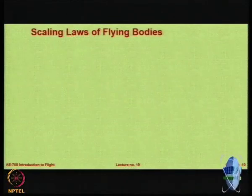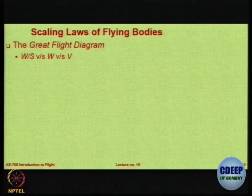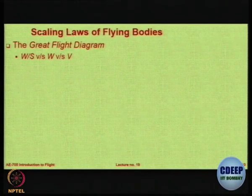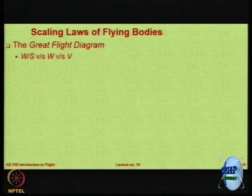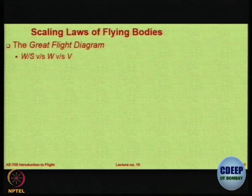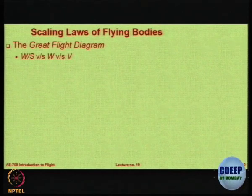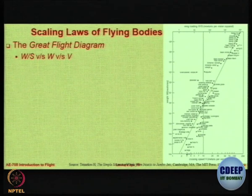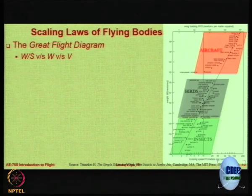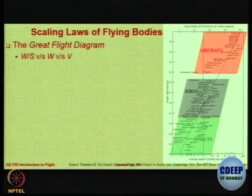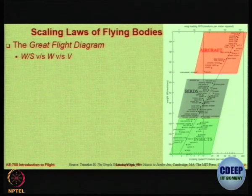Some people have done a lot of research on the scaling of birds. There is a gentleman who has given us a great flight diagram — one diagram applicable to all aircraft and natural flyers, starting from mosquitoes and insects to bats, birds, fighter aircraft, and transport aircraft. That diagram is wing loading versus weight versus velocity. The top portion consists of aircraft, the middle portion consists of birds, and the bottom portion consists of insects. It captures in one page the parameters related to the flight of all kinds of systems — natural as well as manmade. So aircraft, birds, and insects actually follow the same laws.